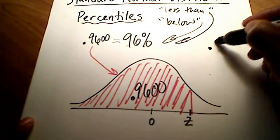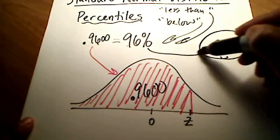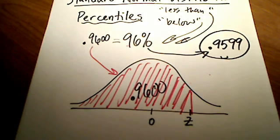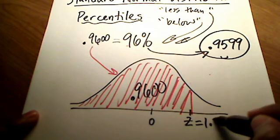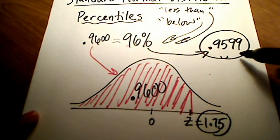That's the closest value that I get as far as an area is concerned. So I'm just going to write that down, .9599. Very close, the closest thing I can find to .96. Now, what Z number corresponds to that? I get a Z number of 1.75, right?